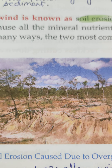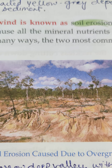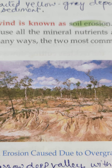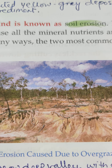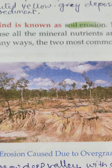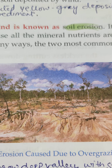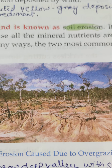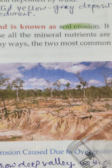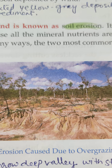Gully erosion is when rain falls heavily over an uneven surface. The runoff scoops out narrow and deep grooves over time. These grooves are called gullies. They grow in size and spread over a large area — this is known as gully erosion.